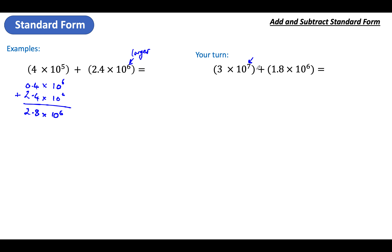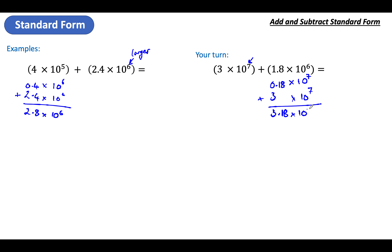So this is the larger because it's to the power of seven — it's 30 million. The other one's only six places bigger, so it's definitely smaller. I'm going to adjust that one to the power of seven. My number got one bigger so my digit gets one smaller. Then I add that to three times ten to the power of seven to get 3.18 times ten to the power of seven. As I say, if you really struggle you can always do it the other way, but it's more prone to mistakes and much less efficient.